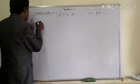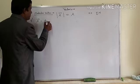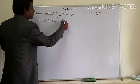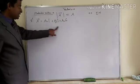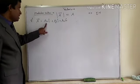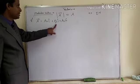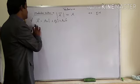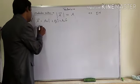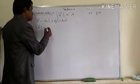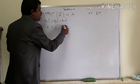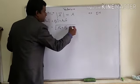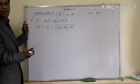If any vector is represented in component form as Ax i-cap plus Ay j-cap plus Az k-cap, then Ax is the x-axis component, Ay is the y-axis component, and Az is the z-axis component. If you want to find the modulus of vector A, then mod of vector A equals A equals under root of Ax squared plus Ay squared plus Az squared.